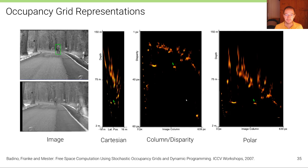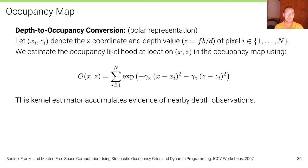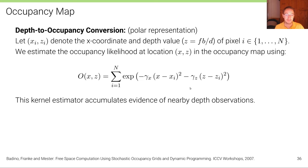Now, how can we derive such an occupancy likelihood map from the disparity or depth maps as input? We'll focus on the polar representation here, though this is possible for all other representations as well. Let X_i and C_i denote the X coordinate in the image domain and the depth value C = fb / disparity of pixel i. We estimate the occupancy likelihood at location (X, C) in the occupancy map using a kernel estimator that accumulates evidence of nearby depth observations.